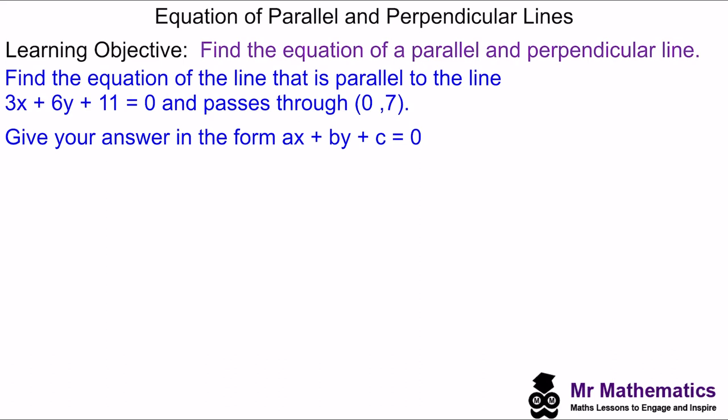So in this question, we have the equation of a line 3x plus 6y plus 11 equals 0, and we've been asked to work out the equation of a line that is parallel to this and passes through (0, 7).